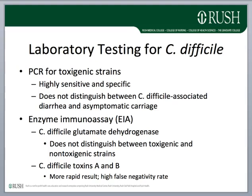An algorithmic approach is favored. The problem with PCR is that it doesn't distinguish between carriage — about 20% of hospitalized patients can be asymptomatic carriers — and C. difficile associated diarrhea. The EIA for glutamate dehydrogenase doesn't distinguish between toxigenic and non-toxigenic strains. The EIA for toxins is more rapid but has a high false-negativity rate, so PCR is appropriate when the EIA is negative but clinical suspicion is high.